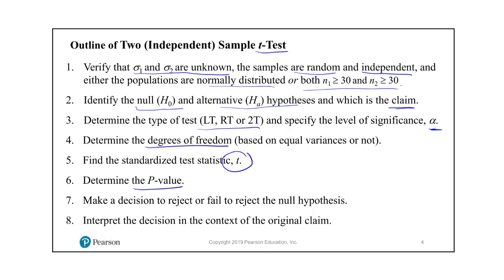Determine the p-value from t — we can use technology for that as well. Then make a decision using the same standards as before: if the p-value is less than or equal to alpha, reject the null hypothesis; if the p-value is greater than alpha, fail to reject the null hypothesis. Finally, interpret the decision in the context of the original claim. If the claim is the null hypothesis, determine whether you have enough evidence to reject the claim or not. If the claim is in the alternative hypothesis, determine whether you have enough evidence to support the claim or not.